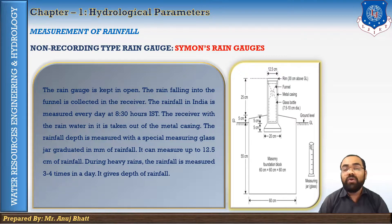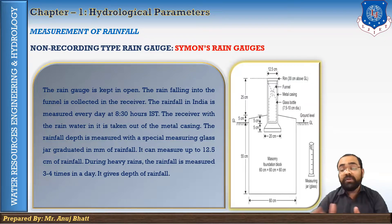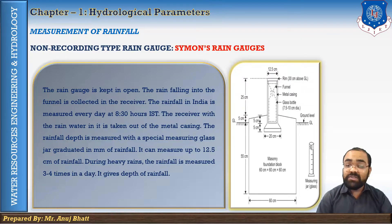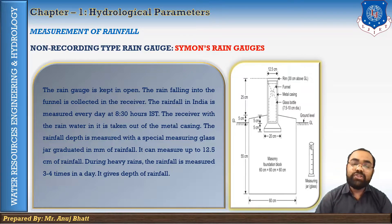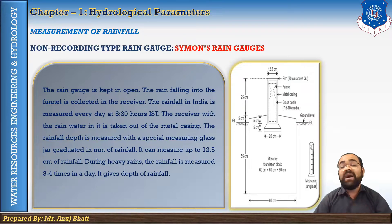There are important points to keep in mind when selecting a site for a rain gauge station. First, the rain gauge site should be an open place. Second, the distance between the rain gauge and the nearest object should be at least twice the height of that object. So if the nearest object has a height of 8 meters, then the distance should be at least 16 meters from that particular object.